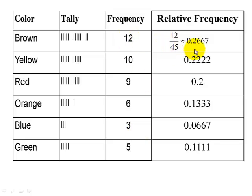So 12 divided by 45 is about 0.2667. 10 divided by 45 is 0.222. 9 divided by 45 is 0.2. So on and so forth.